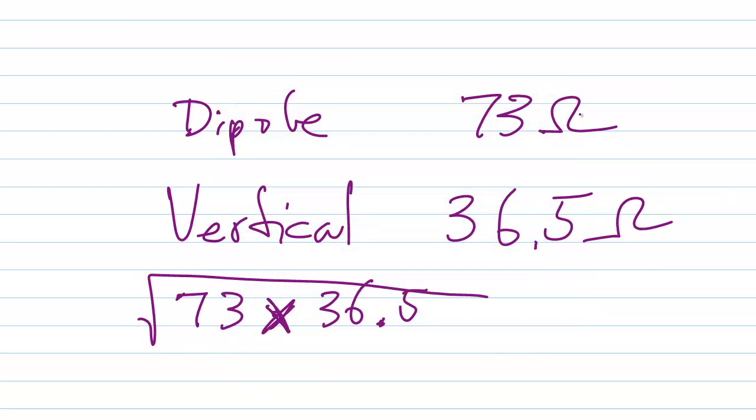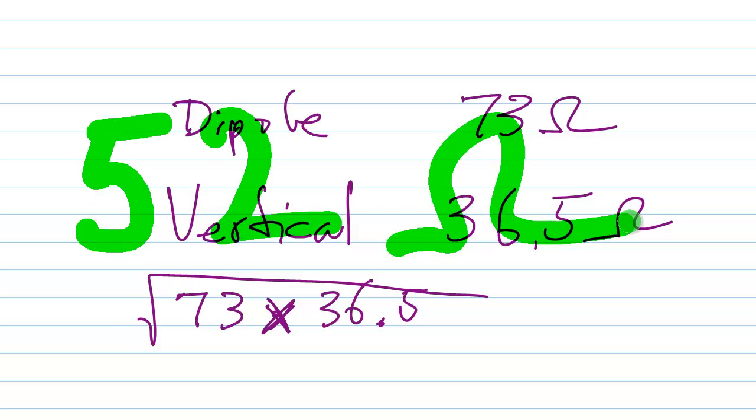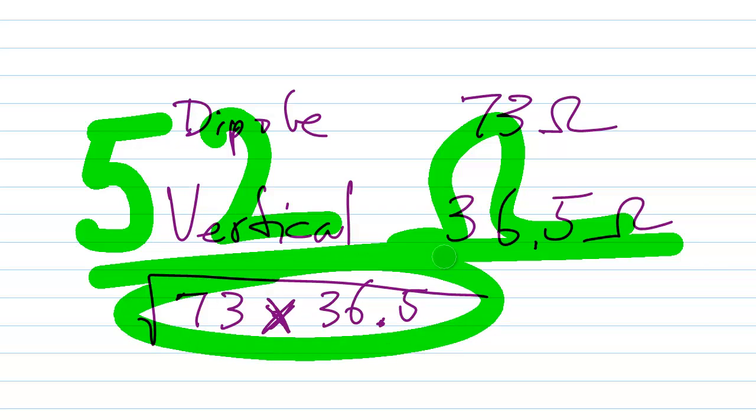Which comes out to roughly 52 ohms. And you'll often hear about 52 ohm coaxial cable, or a ham radio wants a 50 or 52 ohm output.